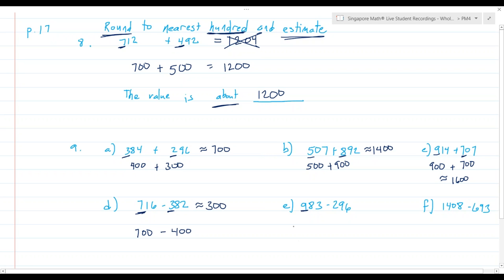Letter E, 983 rounds to 1000. Subtract, 296 rounds to 300. 1000 minus 300 is exactly 700. But that means that the estimate of 983 subtract 296 is 700. Last one on this page, 1408 rounds to 1400. 693 rounds to 700. And 1400 minus 700 is equal to 700. So that's the estimate for that subtraction problem.